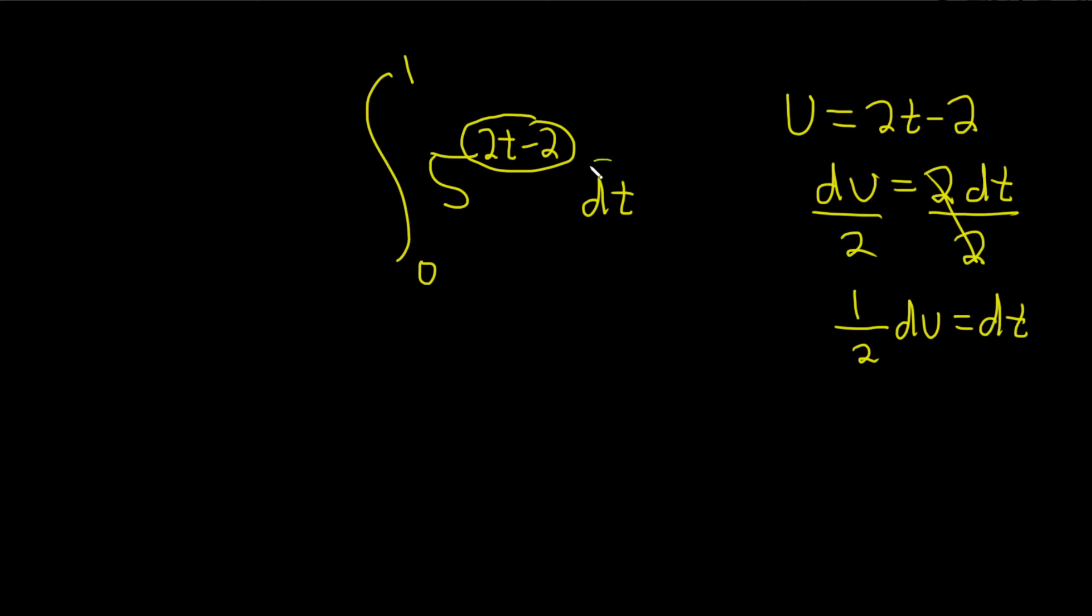So now we're going to replace dt with 1 half du. This becomes 1 half integral. This is 5 to the u, and then we have our du here. So the dt is simply 1 half du.